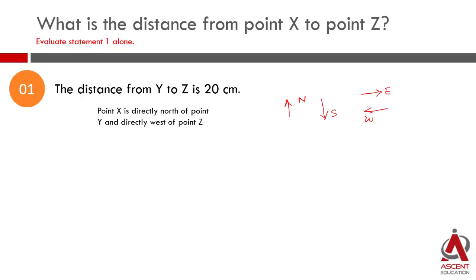Point X is directly north of point Y and directly west of point Z. So Y, X, Z. Because it is directly north and directly west, the angle is going to be a 90 degree angle.